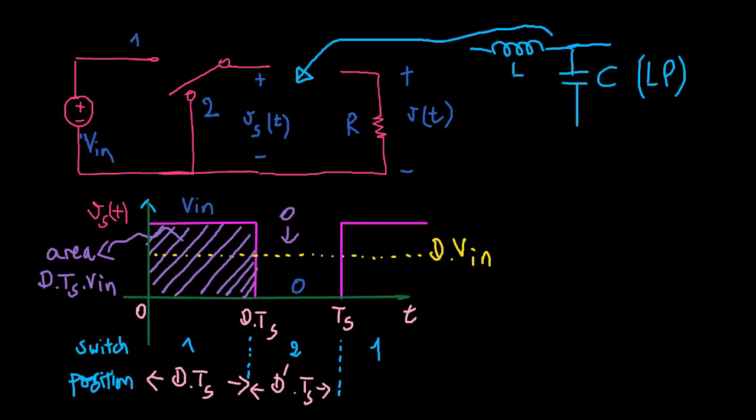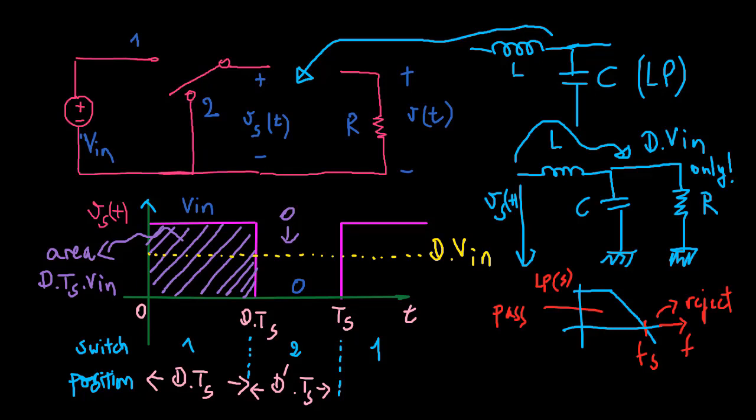Now we insert a low pass filter. The filter is designed to pass the DC component of VS, but to reject the components of VS at the switching frequency and its harmonics.